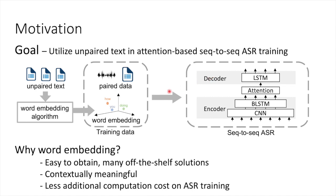Before we go into our method, I'd like to talk about why we select word embeddings as the target. First, word embeddings are generally easier to obtain and there are already many off-the-shelf solutions available. Next, word embeddings are designed to be more contextually meaningful, and we would like our ASR to learn that contextual information from the word embedding vectors. Finally, we want our method to have less additional computation cost, since word embeddings are usually pre-trained.